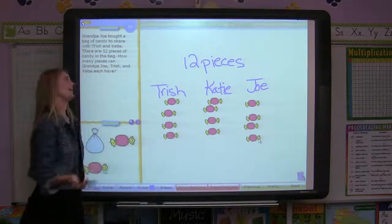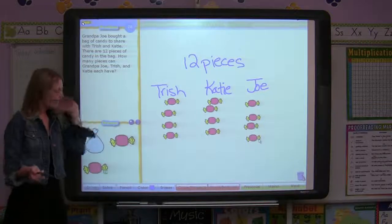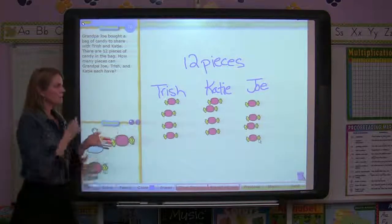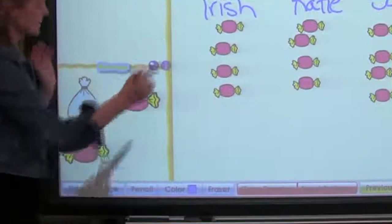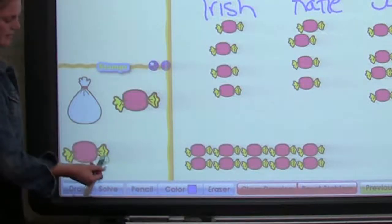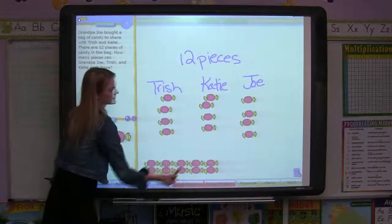Now they can see that each person would get four candies. If this was an upper grade problem and say the number was 50, you don't want to take the time to drag out 50 candies. Right here you can drag and drop this. This is 10 candies. So that would save you a lot of time.